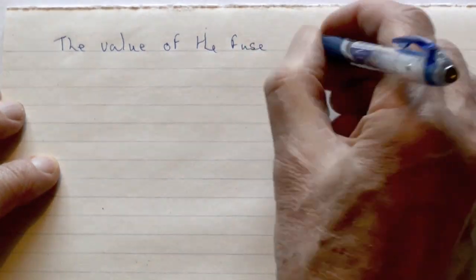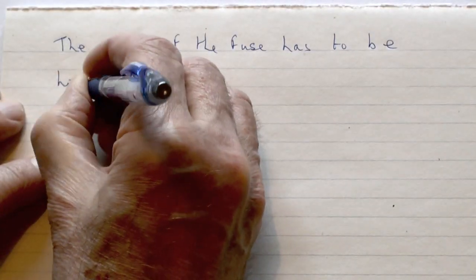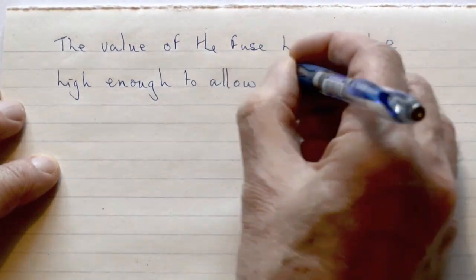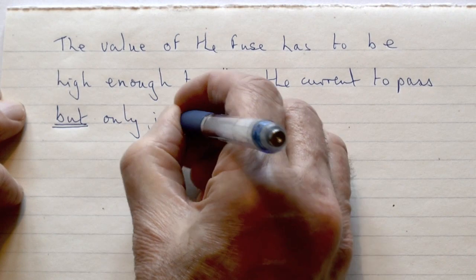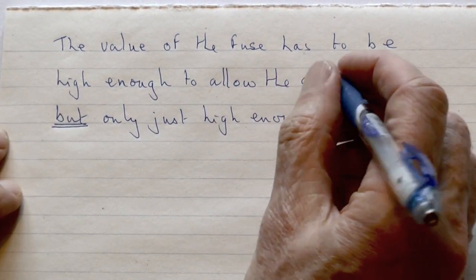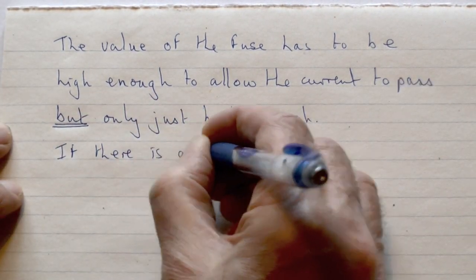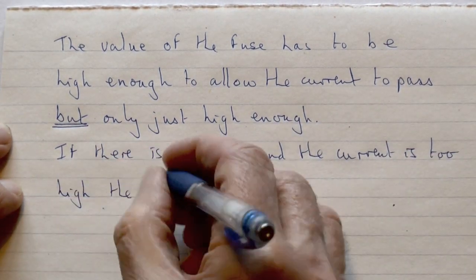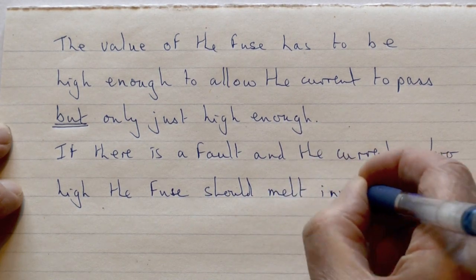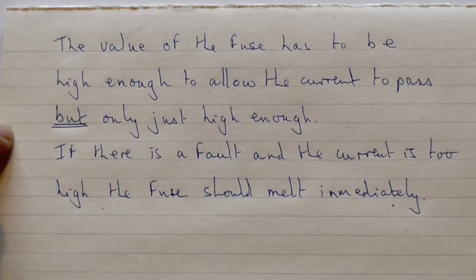The value written on the fuse is the maximum current that could pass before the fuse will melt. When choosing a fuse we must pick one that is big enough to allow the normal current to pass through, but only just. If any excess current passes it is likely that there is a fault and the fuse should melt to protect the circuit and to protect the machine that it's connected to.